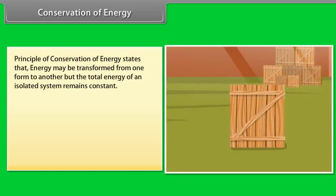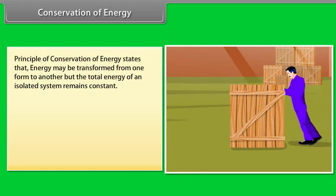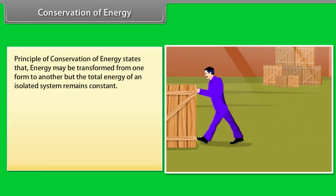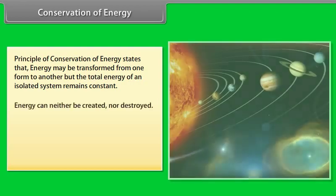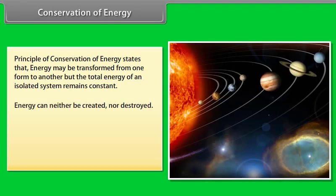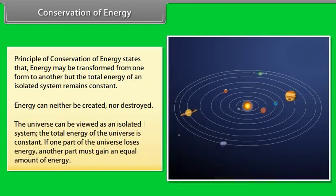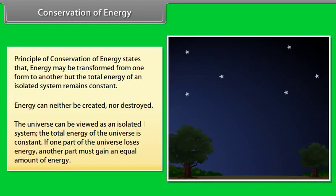Conservation of energy. Principle of conservation of energy states that energy may be transformed from one form to another, but the total energy of an isolated system remains constant. Energy can neither be created nor be destroyed. The universe can be viewed as an isolated system. The total energy of the universe is constant. If one part of the universe loses energy, another part must gain an equal amount of energy.